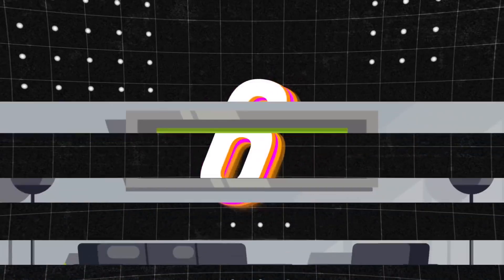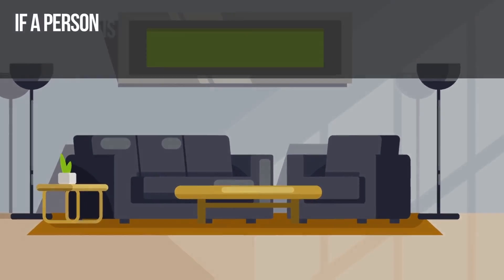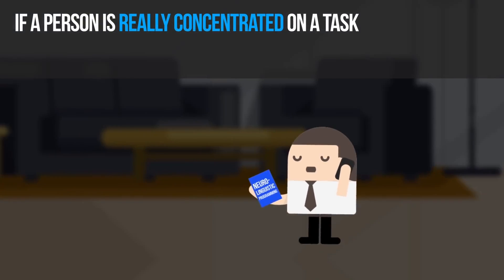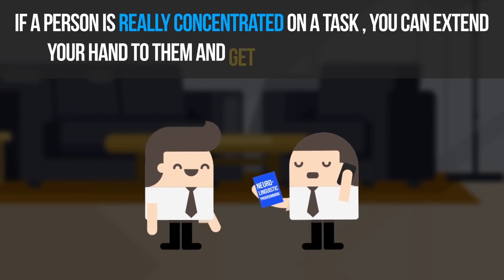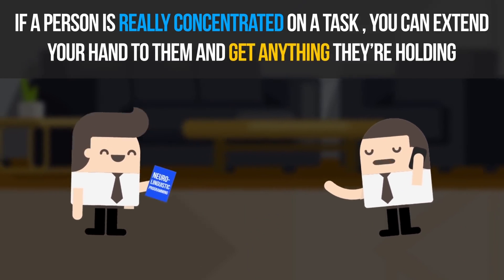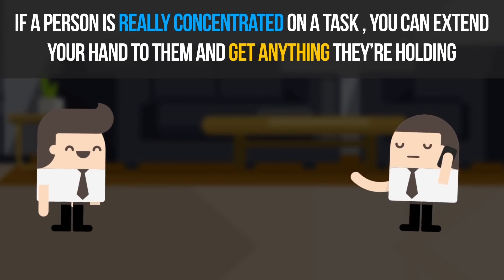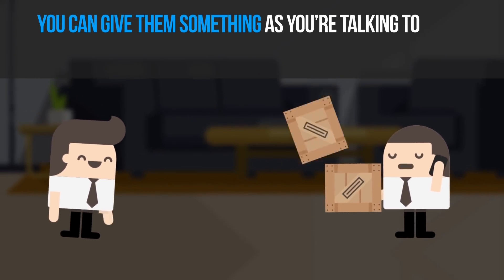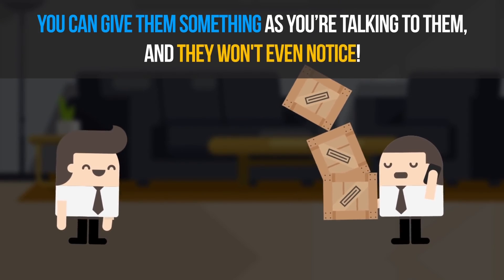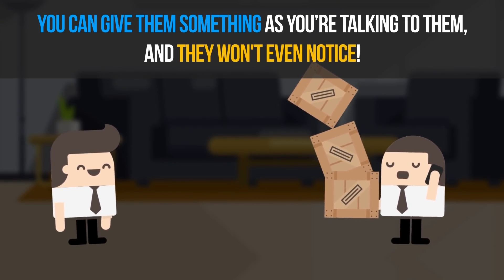Number 6. If a person is really concentrated on a task, let's say they're in the middle of a serious phone conversation, you can extend your hand to them and get anything they're holding at the moment. They might not even remember later on. The trick works the other way around, too. You can give them something as you're talking to them, and they won't even notice. Pretty helpful when you're cleaning up or moving to a new house.